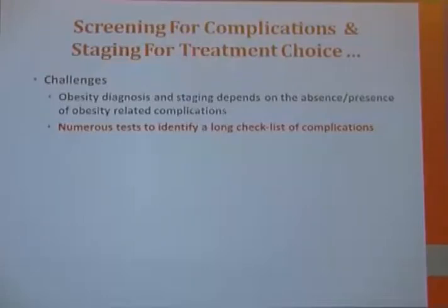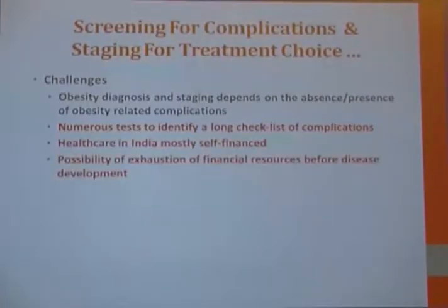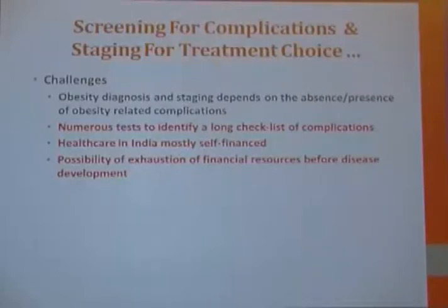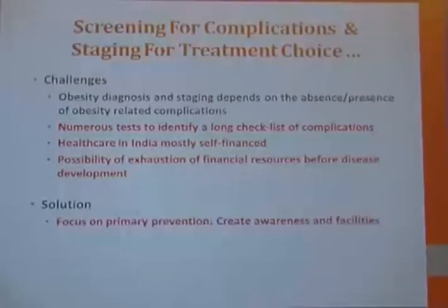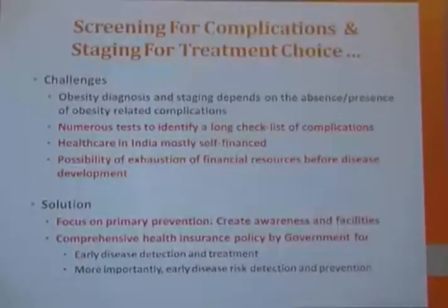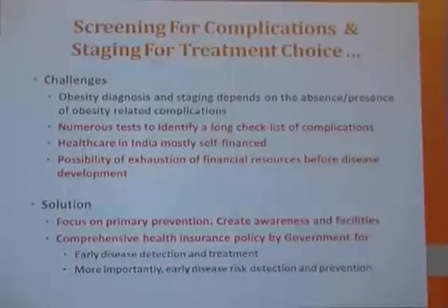Screening for complications and staging for treatment choice are much more important here, to develop our own data. There are challenges — numerous tests are required to identify the long checklist of complications. India is a resource-poor country and healthcare is mostly self-financed, posing the possibility of financial exhaustion before disease detection and treatment is completed. The solution includes focusing on primary prevention, creating awareness among all concerned, implementing comprehensive health insurance policies for early detection and treatment, and most importantly, early disease risk detection and prevention.